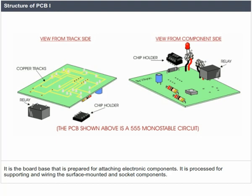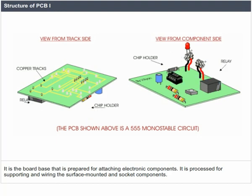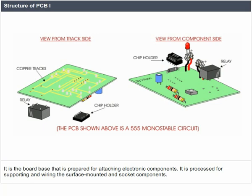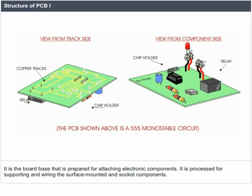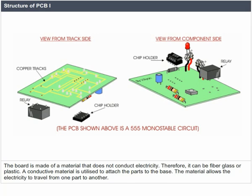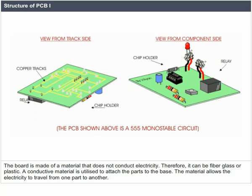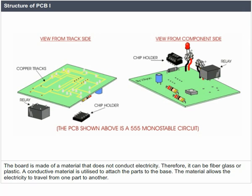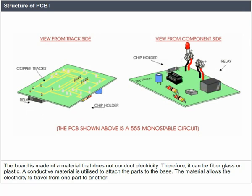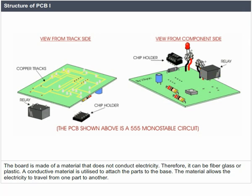Structure of PCB: It is a board base that is prepared for attaching electronic components. It is processed for supporting and wiring the surface mounted and socket components. The board is made of a material that does not conduct electricity; therefore it can be fiberglass or plastic. A conductive material is utilized to attach the parts to the base, allowing electricity to travel from one part to another.